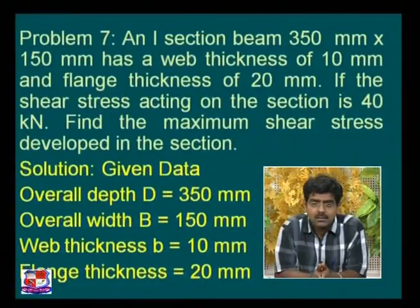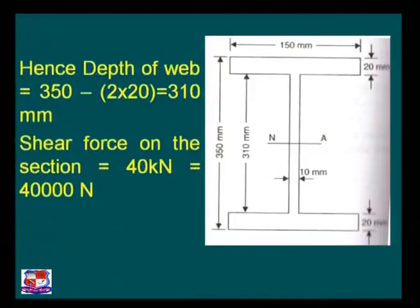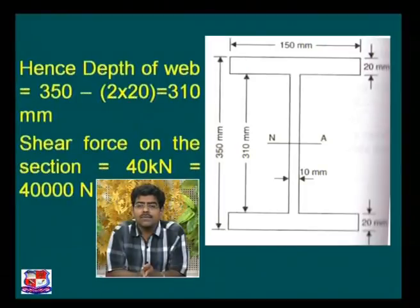The overall depth D is 350 mm, overall width B is 150 mm, web thickness is 10 mm, and flange thickness is 20 mm. Referring to the figure, the depth of the web can be found by subtracting twice the flange thickness: 350 − 2×20 = 310 mm.